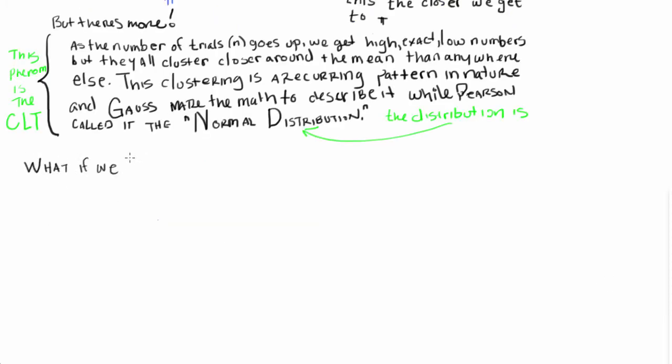You might be like, well, fancy, what do I care about it? Well, what if instead of doing just 8 trials, we did 100 trials, and we wanted to know what are the 95 closest values to our mean.